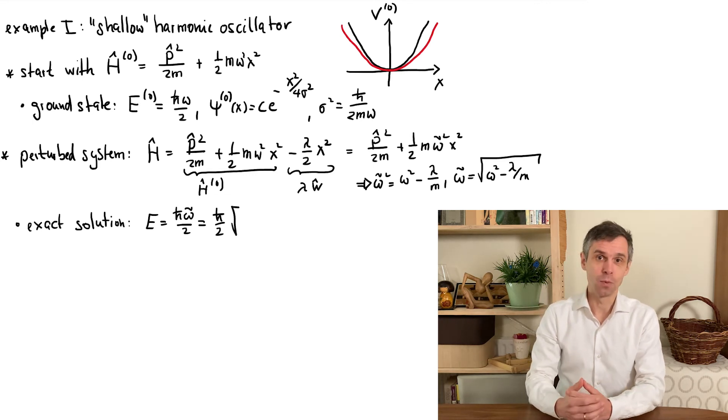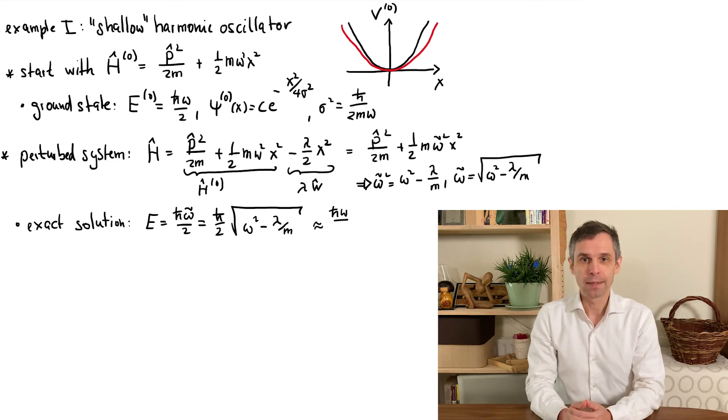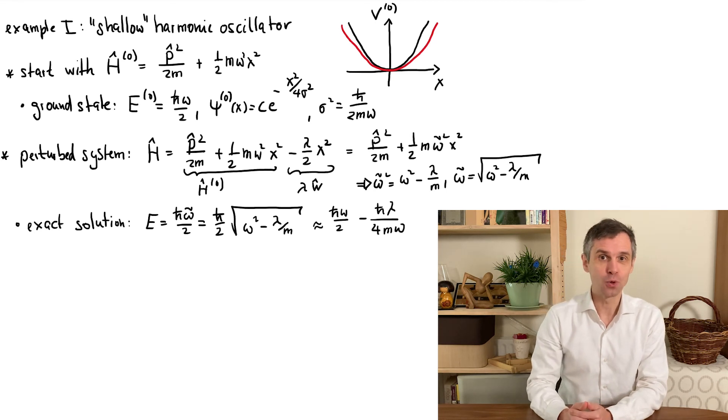The new ground state energy is then given by h-bar omega tilde divided by 2. As we assume that lambda is small, we can further approximate this in a Taylor expansion. And when we do so, we find that the new ground state energy is approximately given by h-bar omega divided by 2 minus h-bar lambda by 4m omega.